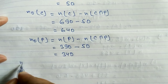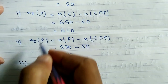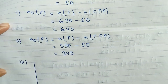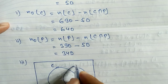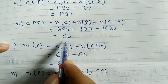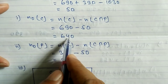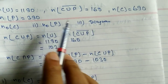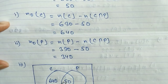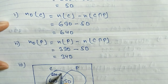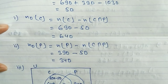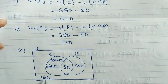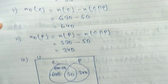In number 3 we have to draw the diagram. Here C for Coke and P for Pepsi. At the intersection we write 50. Coke only is 640, so we write 640. Pepsi only is 340, so we write 340. Students who don't like either — the complement — is 160, so we write 160 outside both circles. Hope you understand question number 10A.